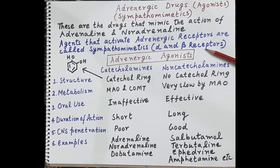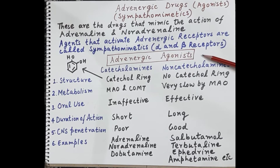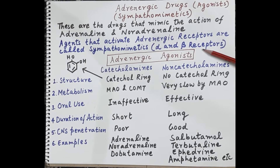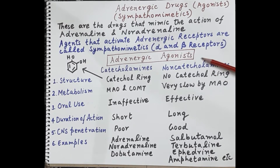Sympathomimetics are also termed as adrenergic agonists. Another category of adrenergic drugs are the sympatholytics. Sympatholytic drugs are those drugs that bind to alpha and/or beta receptors and antagonize the action of adrenaline and noradrenaline.